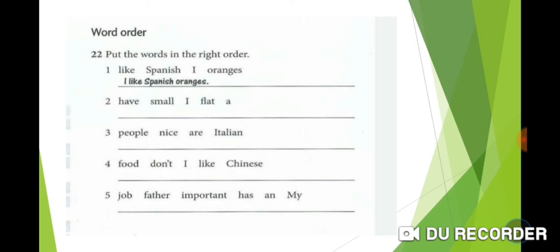Word order: Put the words in the right order. In English sentences, you begin with the subject, then the verb, then the object if present. Number 1: Like Spanish I oranges. The subject is I, the verb is like.